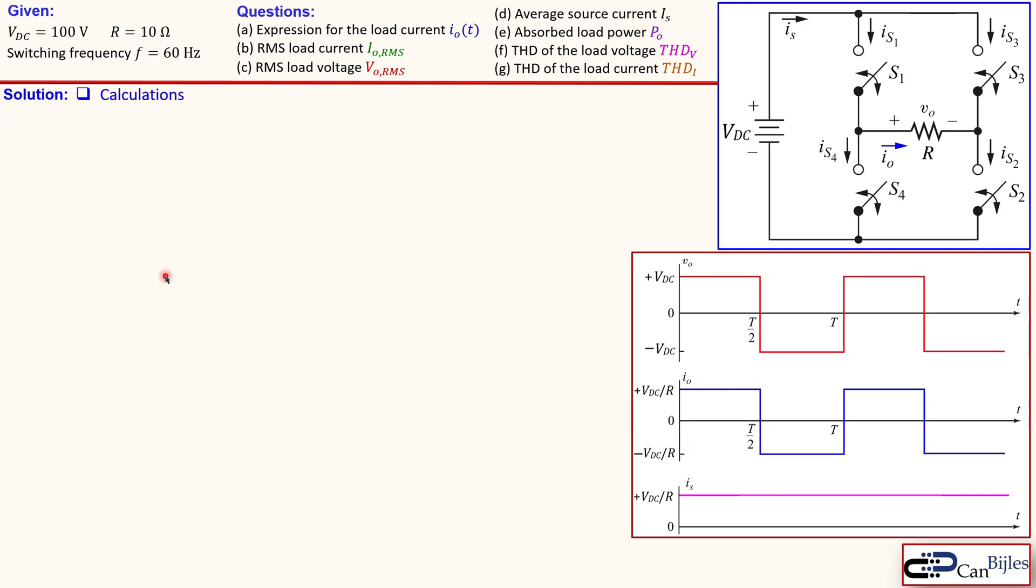Let's now go to the calculations step by step. First the load current expression. As said, we have now two parts. VDC over R, that is for the first half and minus VDC over R for the second half. And if you now look at the values for the VDC and R, that will be then plus 10 and minus 10 amps. And these are the time domains actually for each region for the load current.